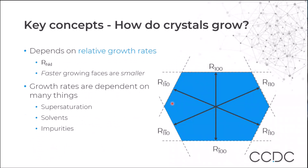The second key concept is how crystals grow. The way crystals grow depends upon the relative growth rates of different faces. We define these as the rate R with an HKL value to indicate the direction of growth in our crystals, as you can see on the diagram on the right. The key takeaway is that faster growing faces are smaller — faces with larger growth rates in a given direction are smaller than those that grow more slowly, and these slower ones tend to dominate the morphologies we see.